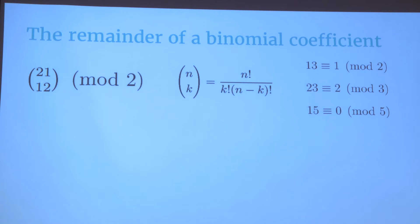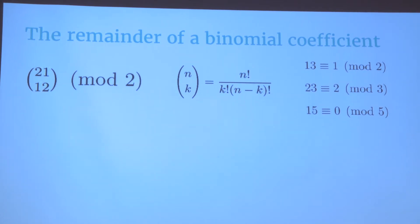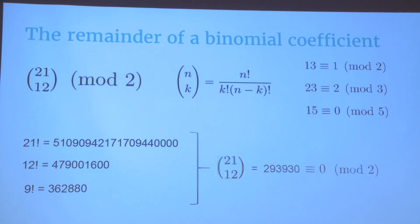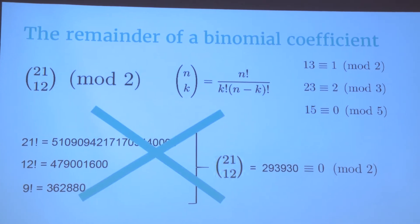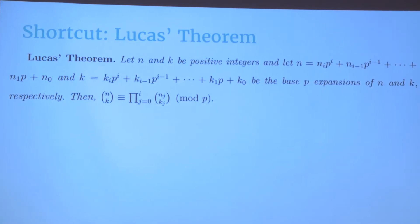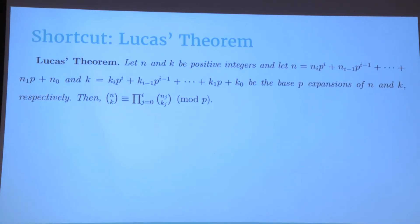Binomial coefficients, apart from appearing in Pascal's triangle, they can also be defined using the factorial function. If I told you, could you please tell me the remainder when we divide 21 choose 12 by 2? You would have to compute 21 factorial, which is a pretty huge number, then 12 factorial, 9 factorial, multiply, divide, and that number divided by 2, and check the remainder. This is quite a long computation. But, luckily, we have Lucas' theorem, which is an amazing and magical shortcut, which basically gives us a remainder when we divide a binomial coefficient by a prime p without actually having to compute this binomial.